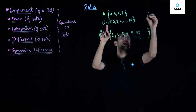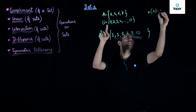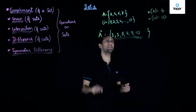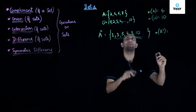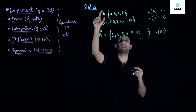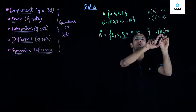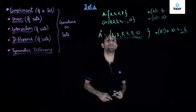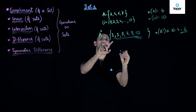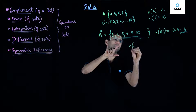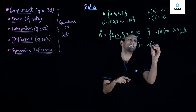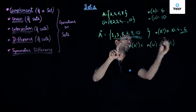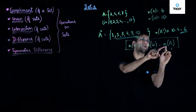Another important thing to note: if the cardinality of set A is 4 and the cardinality of the universal set is 10, then the cardinality of the complement set will be the cardinality of the universal set minus the cardinality of the original set A. So the cardinality of A complement equals 10 minus 4, which is 6. This is the general law relating the cardinality of a complement to the cardinality of the universal set and the original set A.